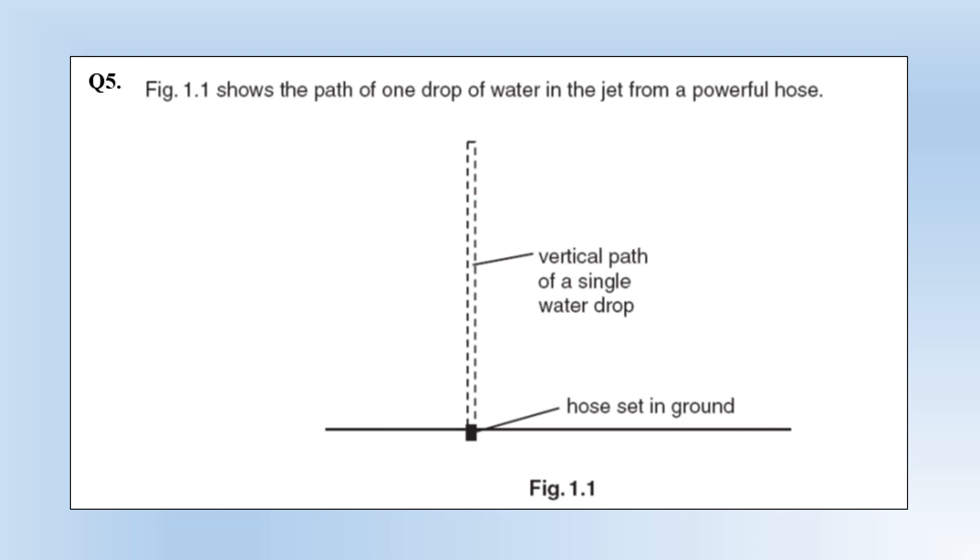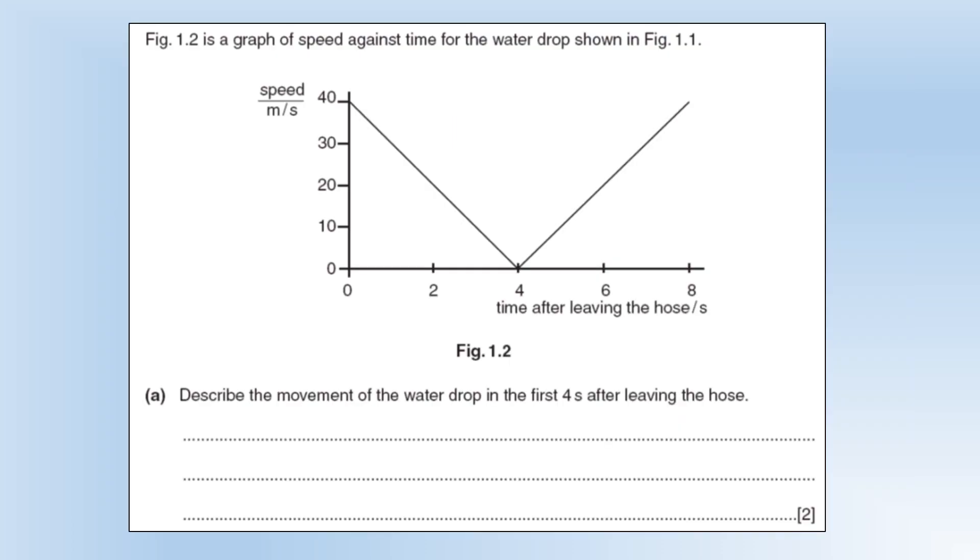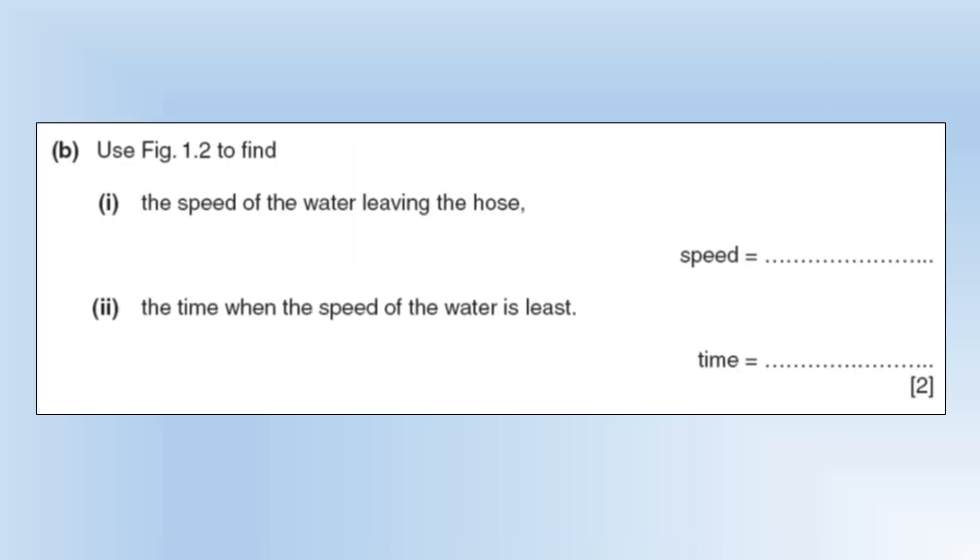The diagram shows the path of one drop of water in the jet from a powerful hose. It's been fired upwards, reached the maximum height and then comes back down again. We've got a graph of speed against time for the water drop. Describe the movement of water drop in the first four seconds after leaving the hose. It's experiencing constant deceleration - the speed is decreasing but it's a straight line graph, hence constant deceleration. Use the diagram to find the speed of the water leaving the hose. We can just read that off the graph - it's 14 meters per second. The time when the speed of the water is least is four seconds.